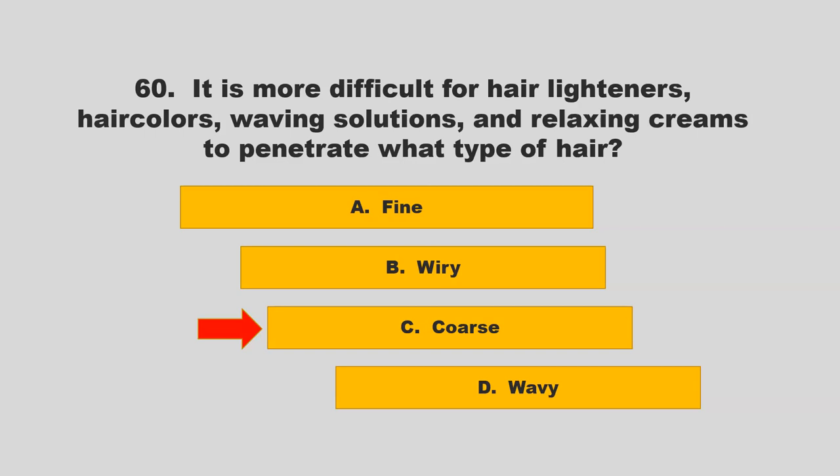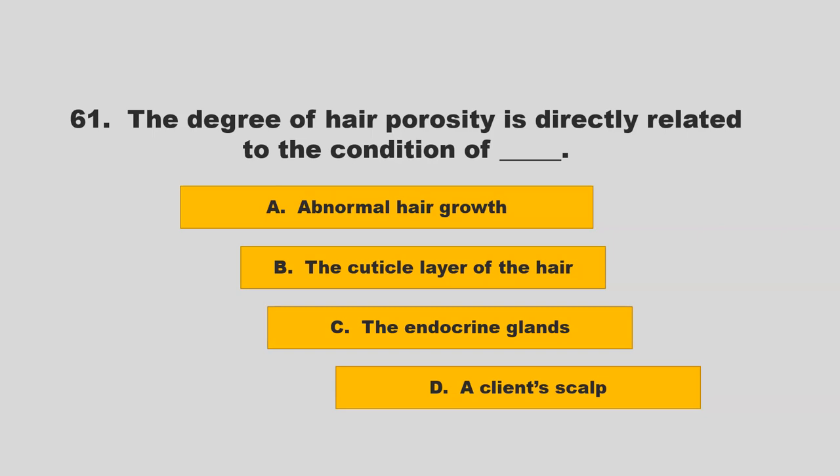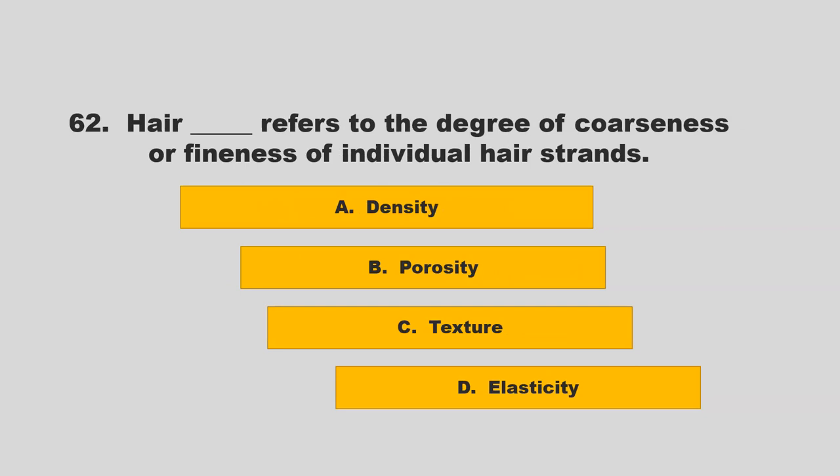The degree of hair porosity is directly related to the condition of blank. Is it abnormal hair growth, the cuticle layer of the hair, the endocrine glands, or a client's scalp? If you chose B, the cuticle layer of the hair, you are correct.